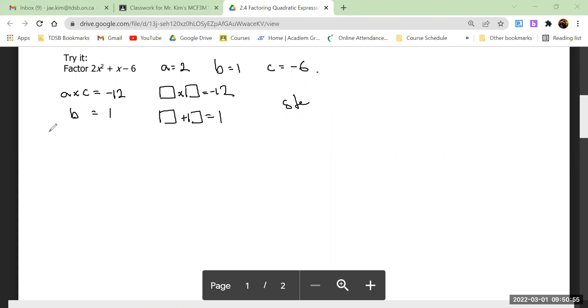So I need two numbers that will multiply to negative 12 but will add to 1. I'll wait because this is very important.